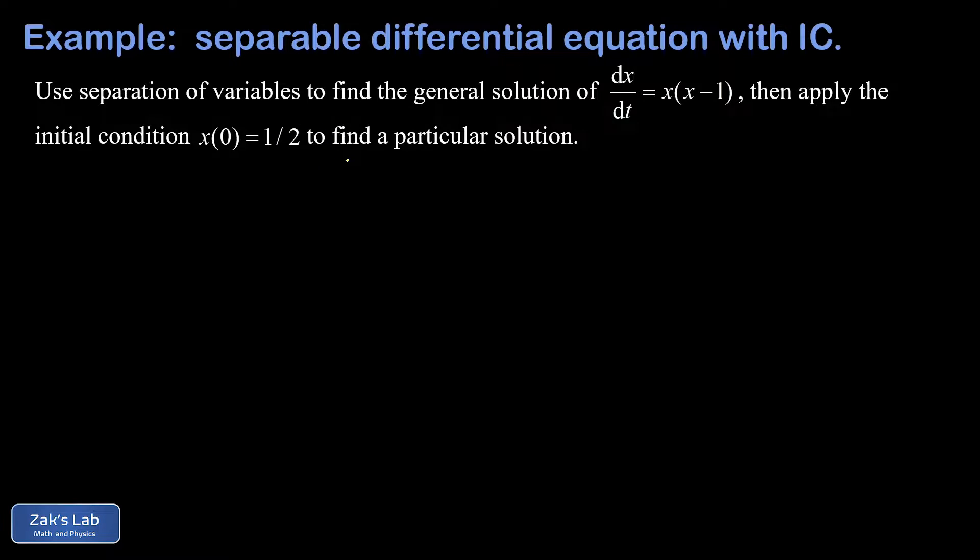In this video, we're finding the general solution of the separable differential equation dx/dt is equal to x times the quantity x minus 1. And then we apply an initial condition x(0) equals 1/2 to find the particular solution of this equation corresponding to that initial condition.